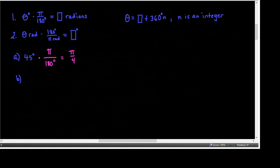For negative 270 degrees, multiply by pi over 180 degrees so the degrees cancel. 90 goes into both 270 and 180, so this reduces to negative 3 pi over 2.